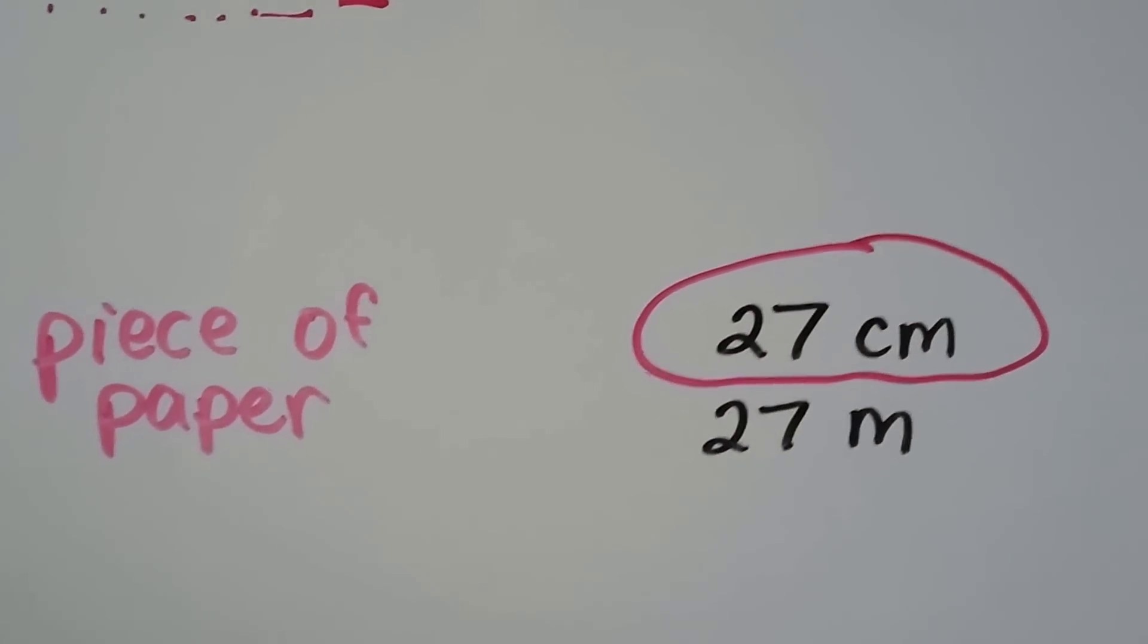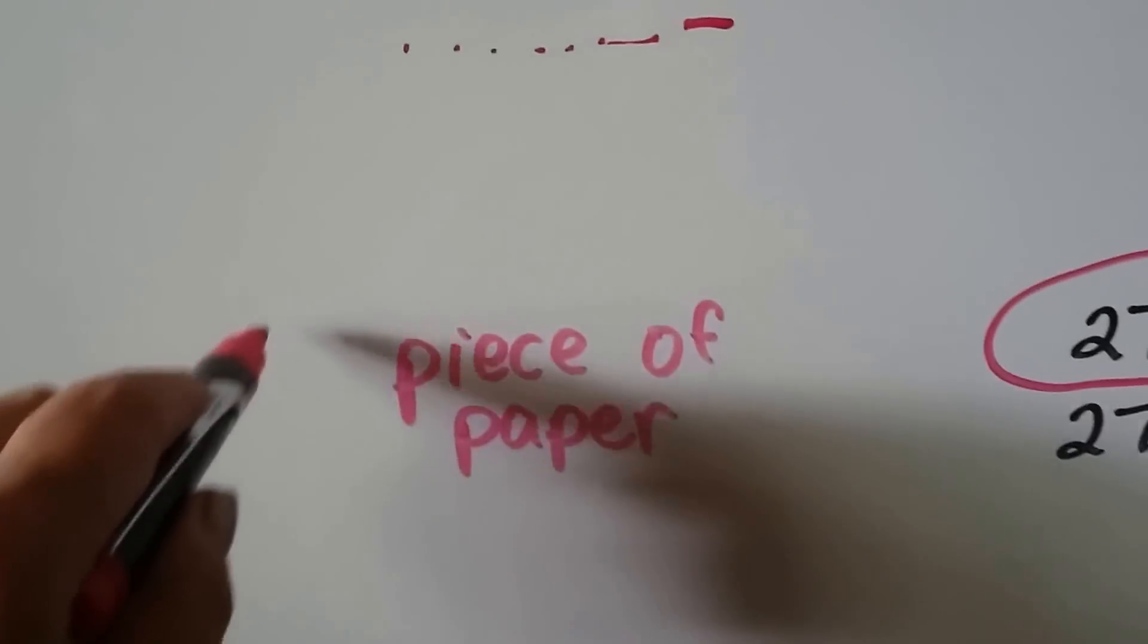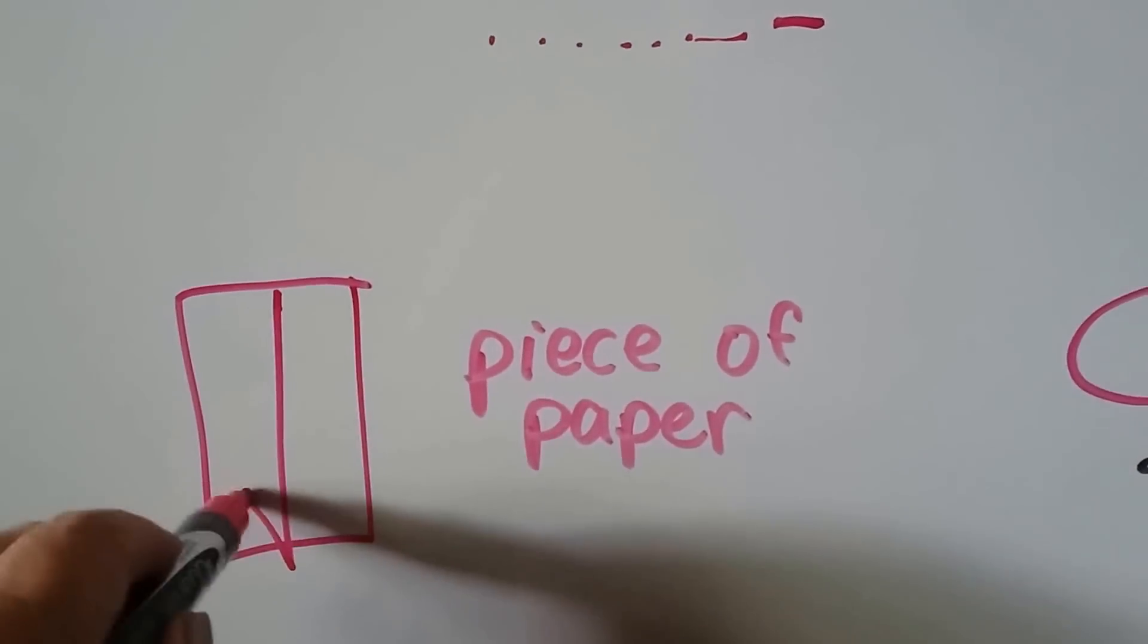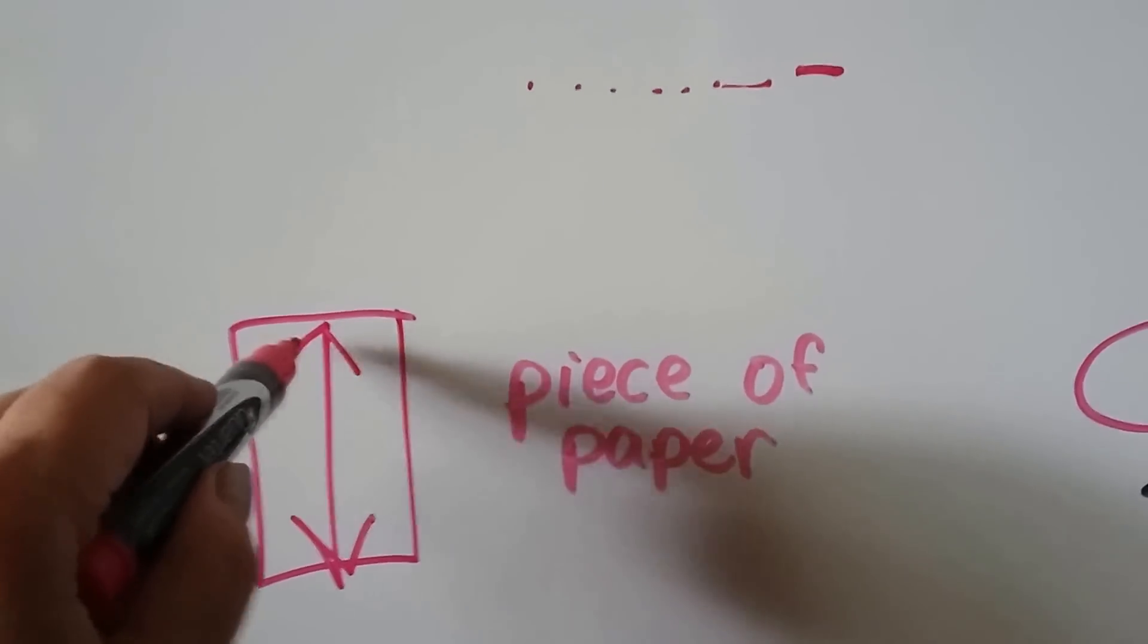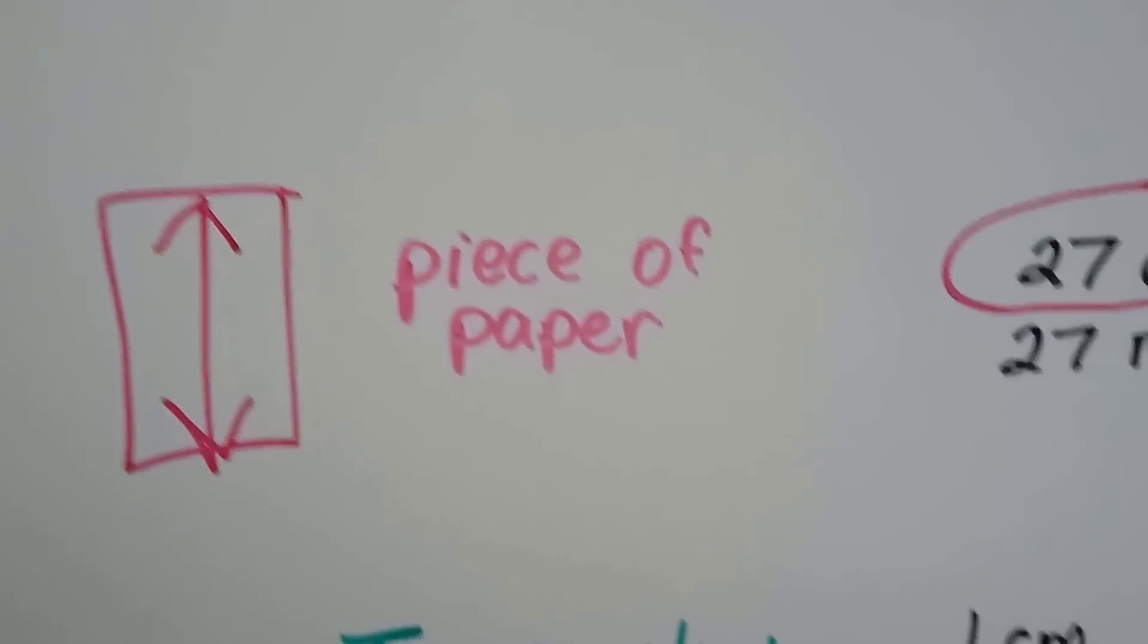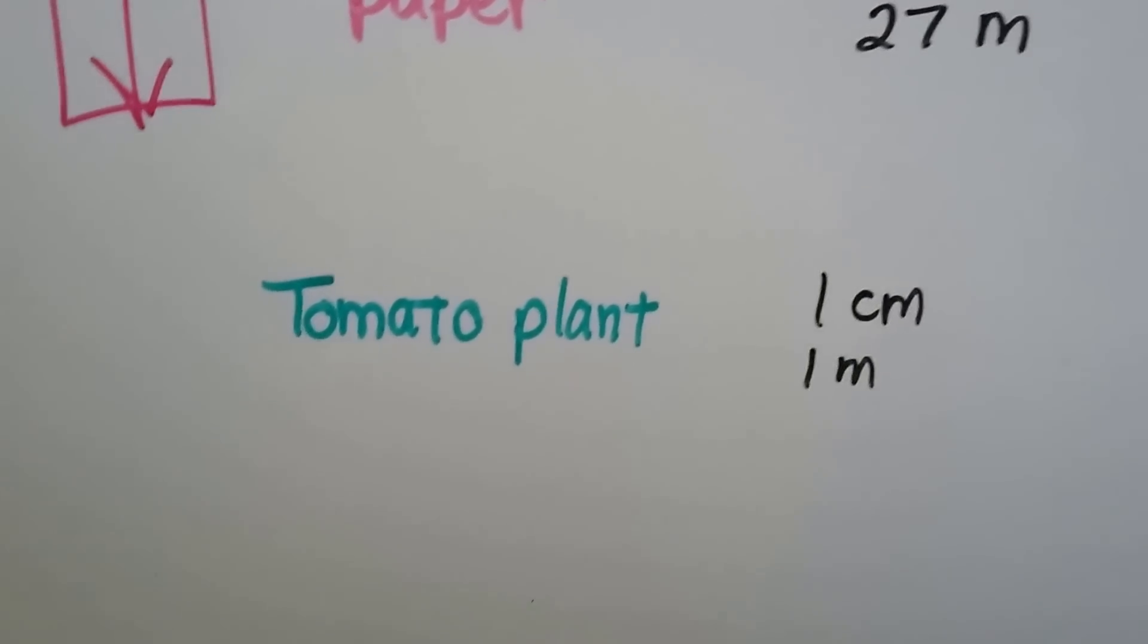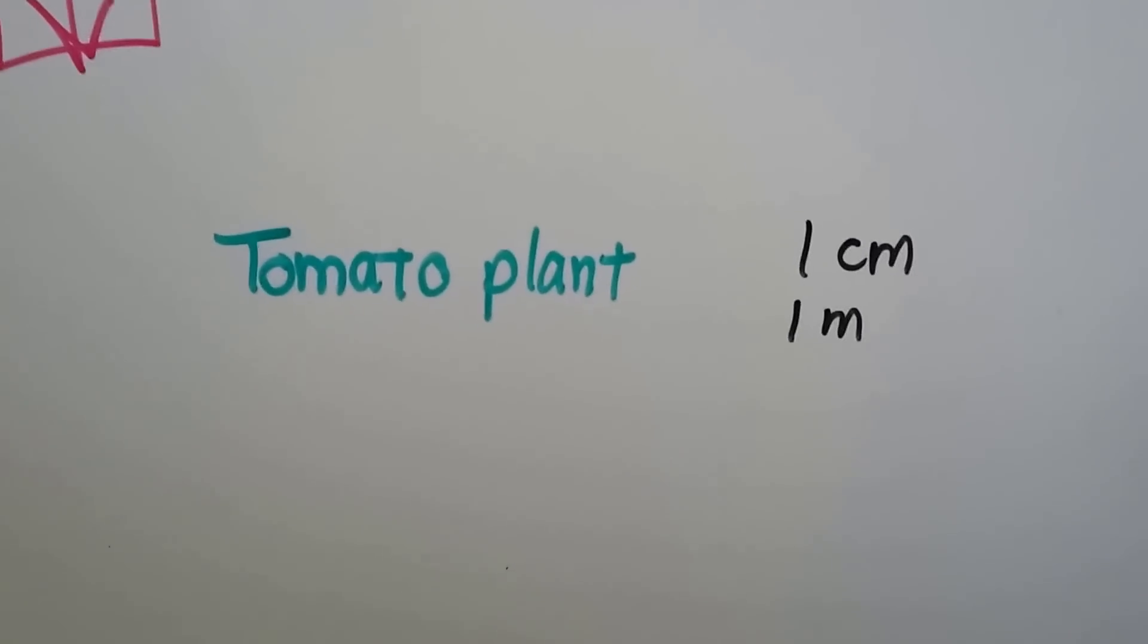Well, if you said 27 centimeters, you're right. A piece of paper is about 27 centimeters. If you took a piece of paper and measured it going this way, it would be about 27 centimeters. Like copy paper or school paper, it's about 27 centimeters.